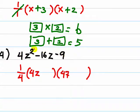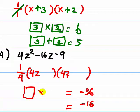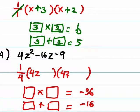Look at the product of the 2 numbers, which is negative 36. And also look at this coefficient, negative 16. So we are looking for 2 numbers so that if we multiply, we have negative 36, and if we add, we get negative 16.